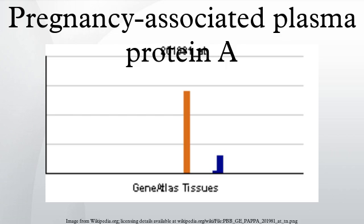This gene encodes a secreted metalloproteinase which cleaves insulin-like growth factor binding proteins. It is thought to be involved in local proliferative processes such as wound healing and bone remodeling.